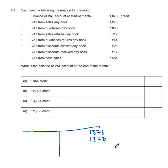VAT from the purchases day book is VAT that we can get back, so that goes on the debit side — 850 pounds on the debit side of the VAT account. You might see it called a VAT control account; it's the same thing, so don't get confused. Everything goes on the same side as in a normal VAT account.